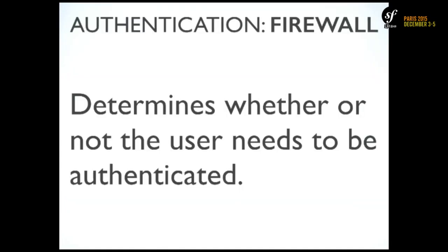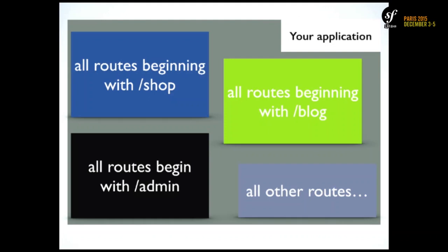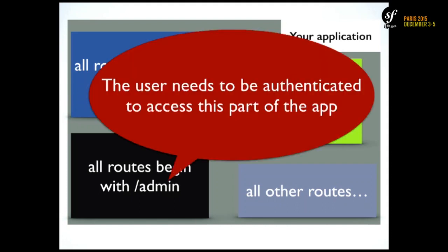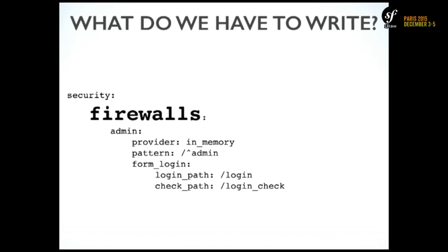Firewall is all about making sure that when a user comes somewhere in your application, he will be asked to be authenticated. For example, you have an application with some URIs beginning with /shop, /admin, whatever you want. When a user types /admin/something, they will be authenticated. Firewalls are configured under the security key, and you have three main pieces of information to give: the provider, when authentication may occur, and how the user needs to be authenticated.